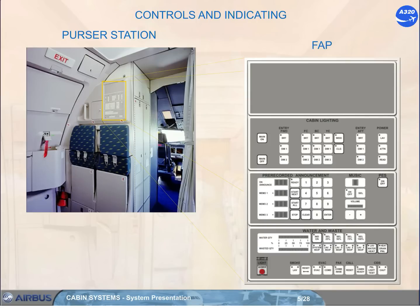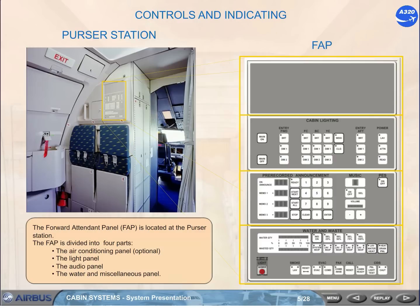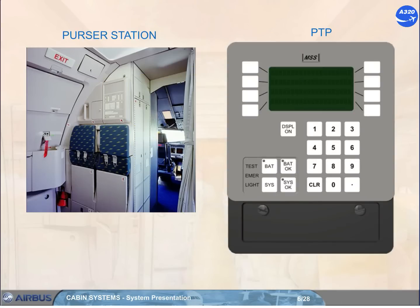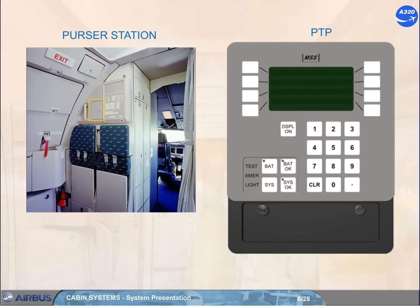The FAP is divided into four parts: the Air Conditioning Panel (optional), the Light Panel, the Audio Panel, and the Water and Miscellaneous Panel. The Programming and Test Panel, PTP, is located next to the Forward Attendant Panel behind a hinged access door. It is equipped with a cabin assignment module, CAM, which contains all the software of customer-specific layout and defined parameters. The PTP informs the crew about the cabin system status.